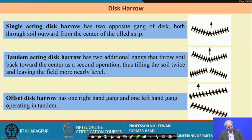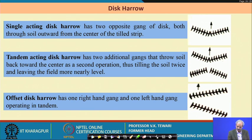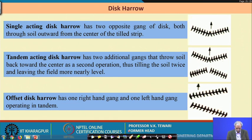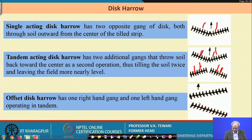The offset disc harrow operation has been shown in the field. For a single acting disc harrow, soil is thrown on one side. Here the soil is thrown to this side, and here the soil is thrown to this side — the action of throwing soil has been demonstrated.